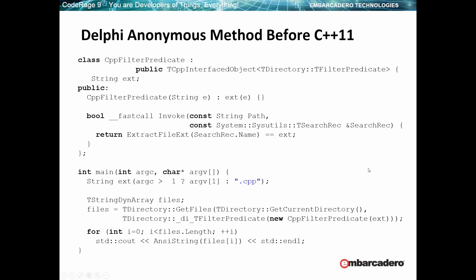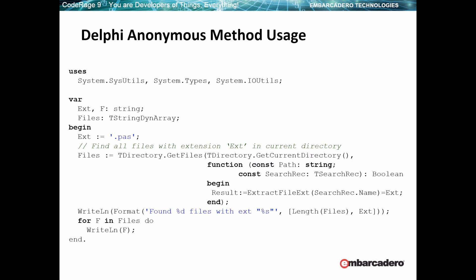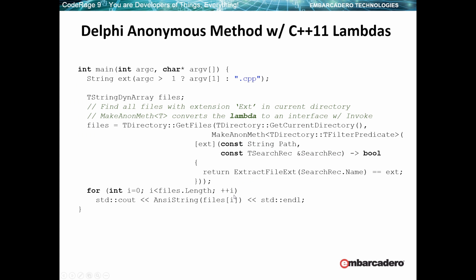I'm going to switch back to the slides and show that. Here's the version we just ran with the Lambda interface. Here's the Delphi version — you can see getFiles passing a function inside. And here's the C++ version. Besides the makeAnonMeth, the rest is just a Lambda.